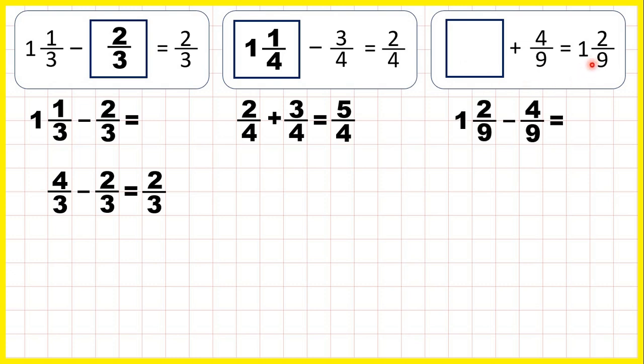So we can work out one and two ninths minus four ninths to find our missing number. But four ninths is larger than two ninths. And because the fraction that we're subtracting is larger than the fraction in our mixed number, we need to change this mixed number into an improper fraction.